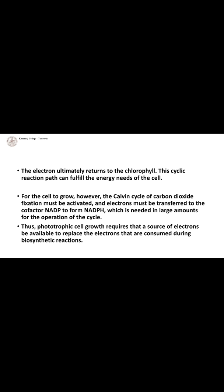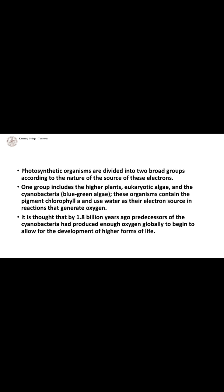Phototrophic metabolism involves two broad groups with four different types. Higher plants, eukaryotes, and algae have one type, and cyanobacteria have the other broad group. Cyanobacteria contain the pigment chlorophyll and use water as the electron source in reactions that generate oxygen, which allows development of higher life forms.